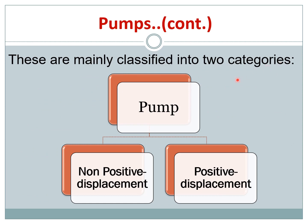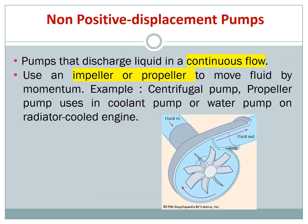The hydraulic pump is classified into two categories. The first one is called non-positive displacement and the second one is called positive displacement. In this slide we will see what are the differences between these two.